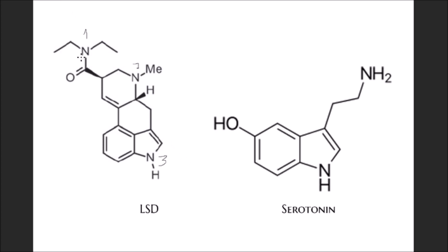If we look at nitrogen number one, it's an amide nitrogen, and usually amide nitrogens are less basic. That's because there is resonance — here we have the electron pair which gives the nitrogen its basicity, and you can see it has resonance with the oxygen. So this electron pair is weaker, which makes the nitrogen not that basic.